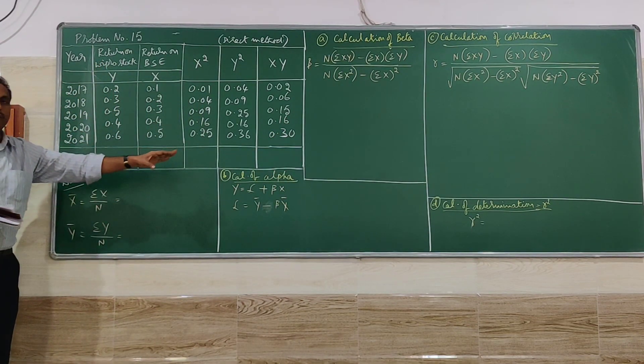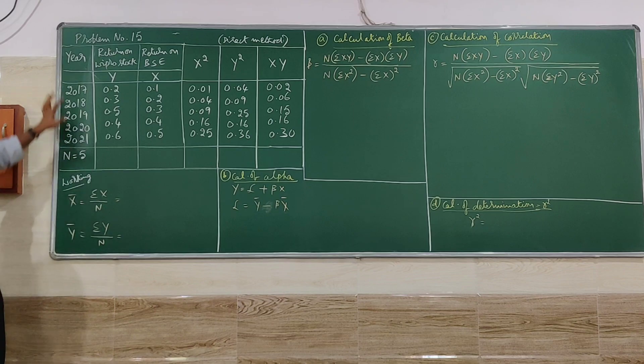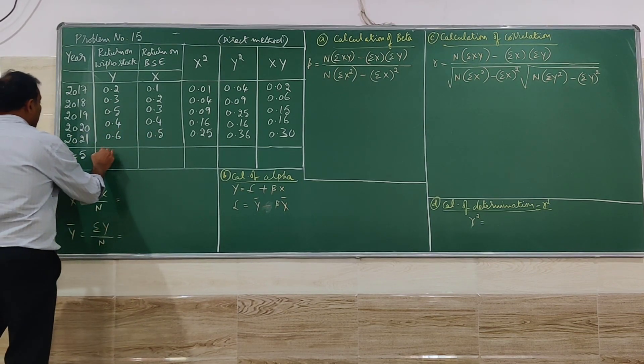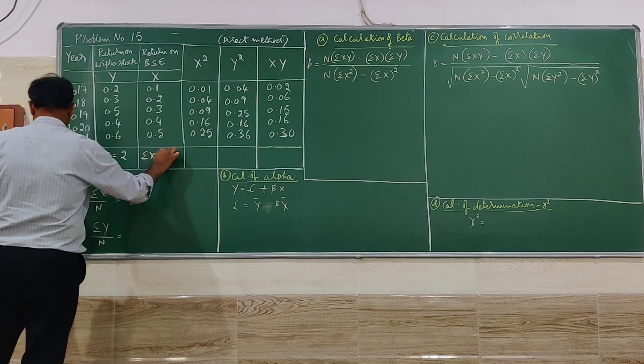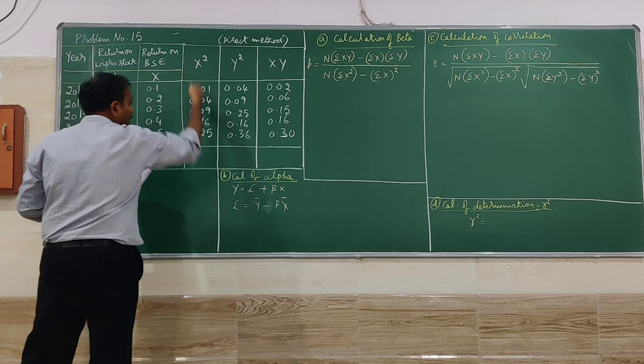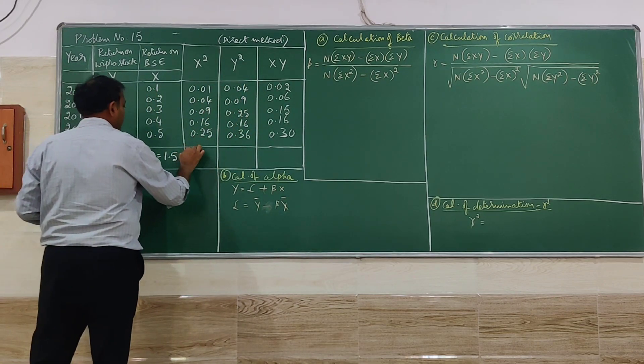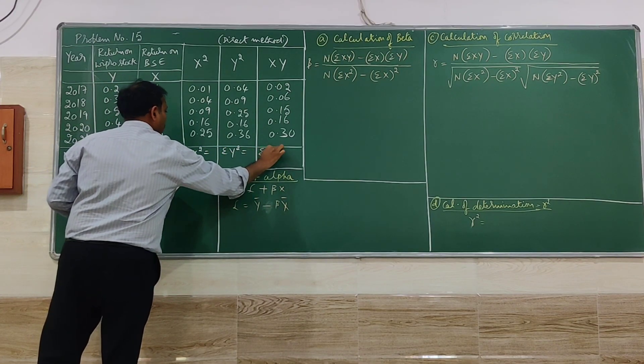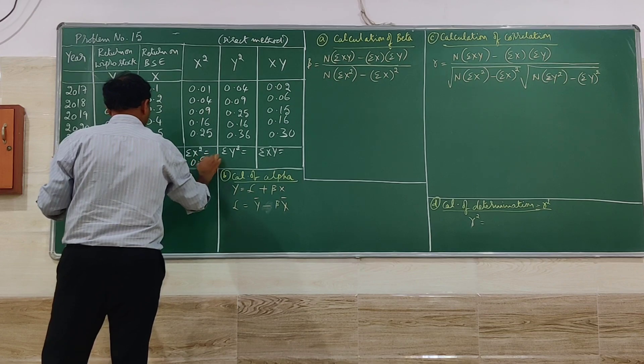Coming to the first column that is year. There are 5 years given, 1, 2, 3, 4, 5. So N is equal to 5. We have to go for totaling X and Y columns also. So Y column is giving here the total of 2. X column is giving 1.5. Similarly, X square total, Y square total and summation XY. Summation X square 0.55.